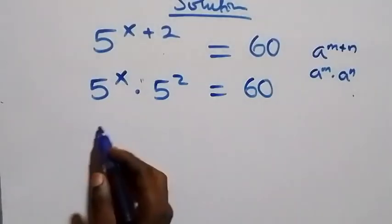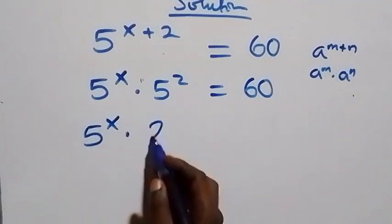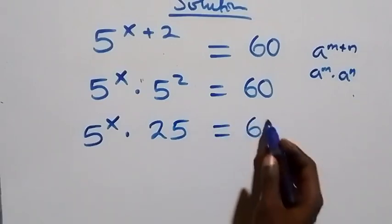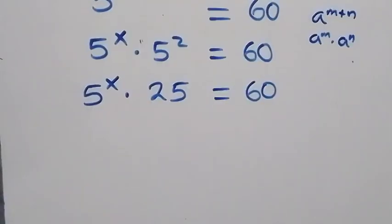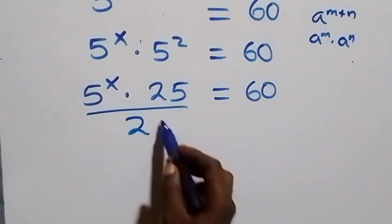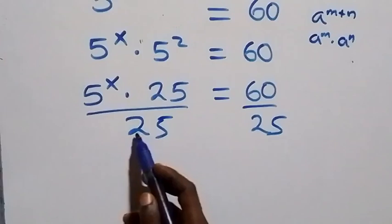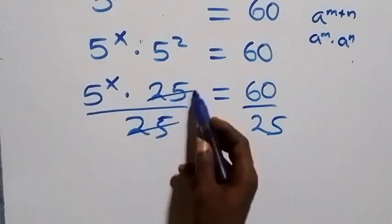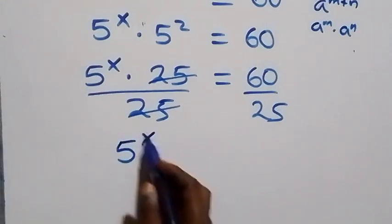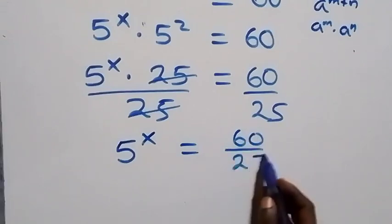This can also be written as 5 raised to power x times 5 squared, which is 25, equals 60. In the next step, we divide both sides by 25. The 25 cancels and we have 5 raised to power x left, which equals 60 over 25.